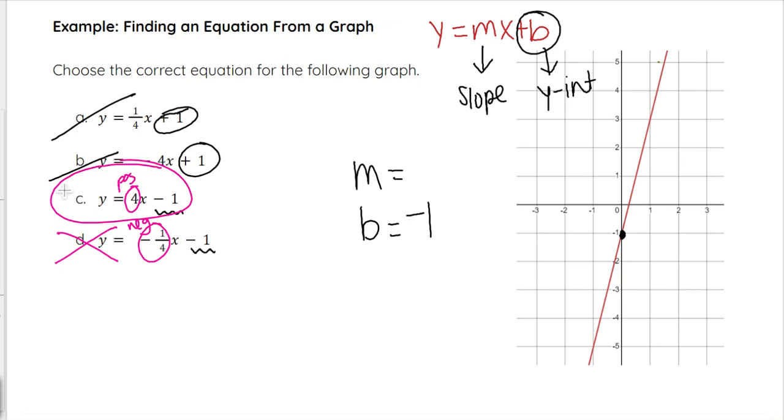So C would be our correct answer. Again, this is requiring no plugging in, no calculations, other than just looking for the y-intercept. And on some of them, if it is written in a way where maybe you couldn't eliminate that last option, maybe they were both positive, for example, you would still just have to count the slope, the rise over the run, to find your answer as opposed to picking a point, plugging it in multiple times, picking another point, plugging it in.